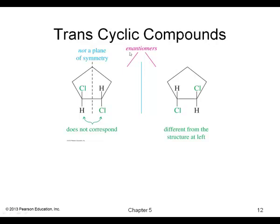For a trans-cyclic compound, note there is no plane of symmetry. So the molecule is chiral, and its mirror image will be different. Therefore, we can have a pair of enantiomers.